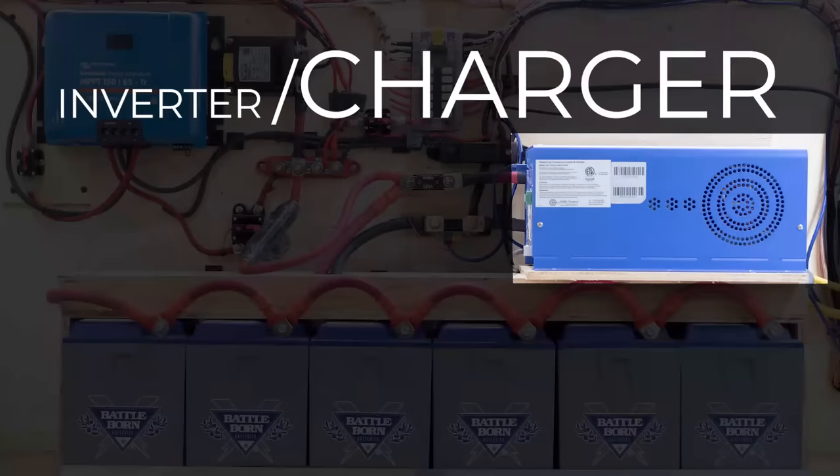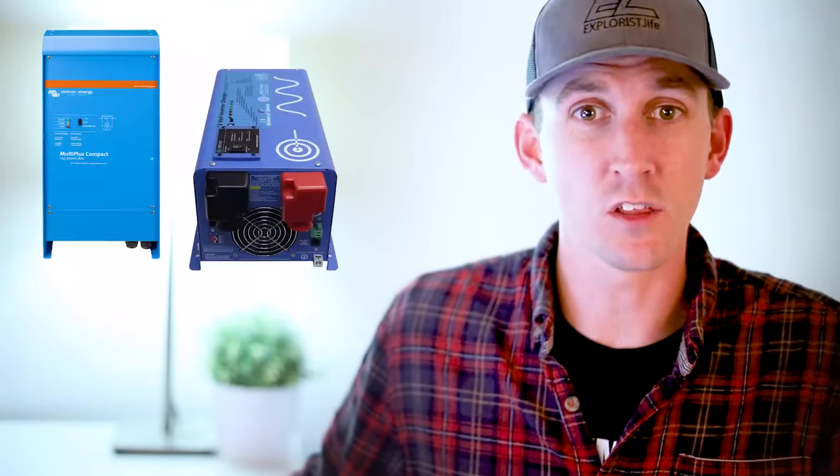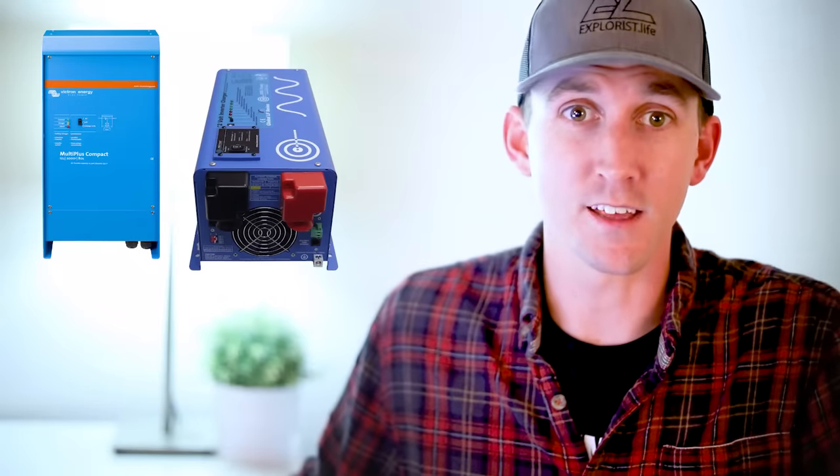The charger side of the inverter-charger combo lets you charge the batteries via shore power — which is a campground power pedestal or even a plug-in at somebody's house. Shore power is basically just an external plug-in somewhere on the grid. You can get a charger as a totally separate unit, sometimes called a converter, but typically it's easier and cheaper to just get the all-in-one inverter-charger combo package. They charge your batteries at a rapid rate, anywhere from 40 to 70 amps.